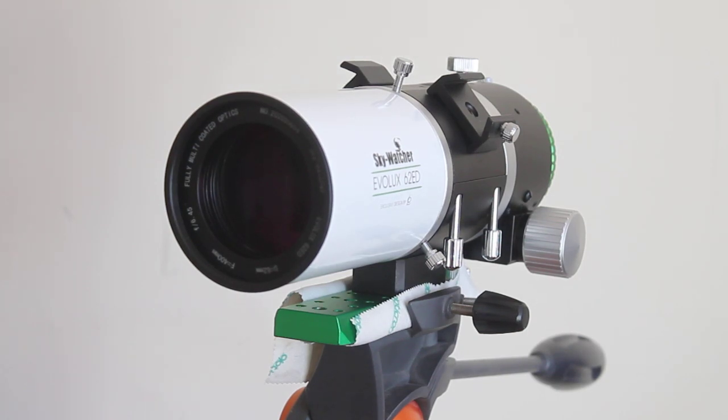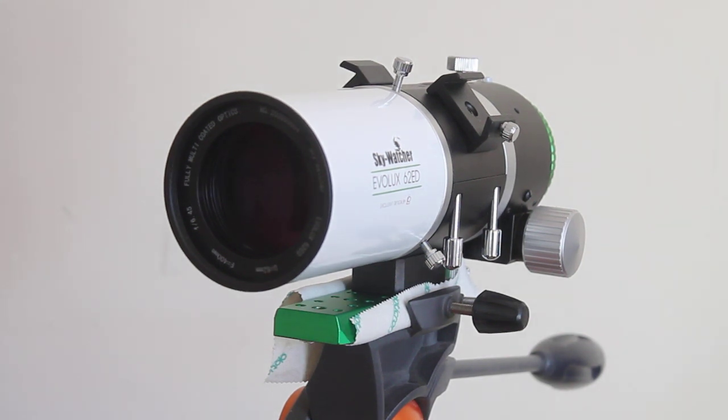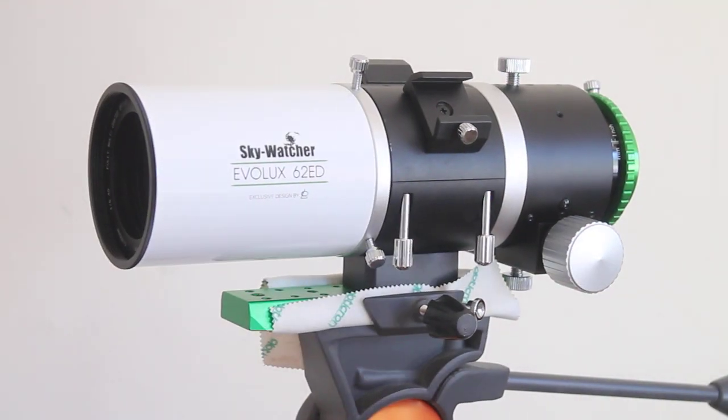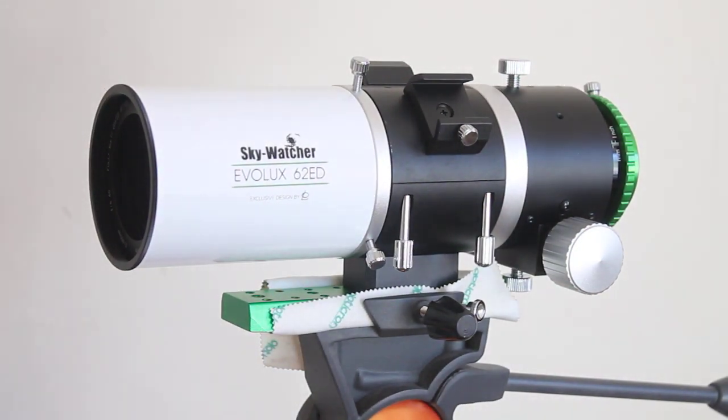Howdy folks, thank you very much for tuning in. I hope you're all well today. So today we're going to have a quick look at the Sky Watcher EVOLUX 62ED OTA. It's a very attractive compact little OTA, and as with most of our products, if available, you can support our channel by purchasing in the link in the description below.